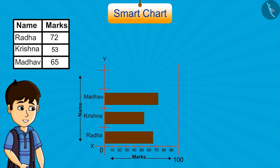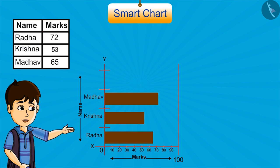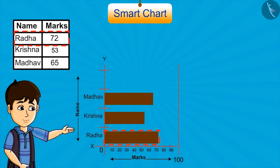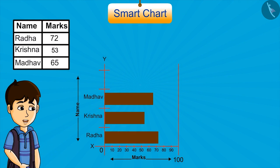If we place the strips like this, is it right? You can see that according to the chart, Radha got 65 and Madhav got 72. This is very unfair to Radha — we cannot show wrong data like this. This smart chart is perfect because it is showing the correct marks scored by the students.